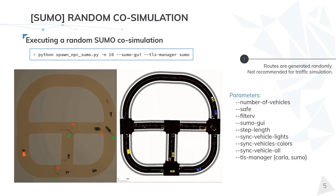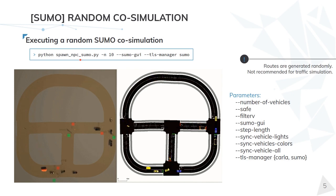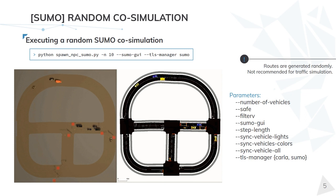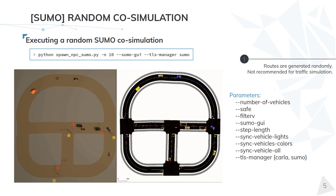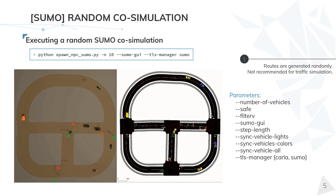The easiest way to run a co-simulation between CARLA and SUMO is by executing the Spawn NPC SUMO script. This script imitates the behaviour of the Spawn NPC script that we are already providing, but the vehicles, instead of being managed by the traffic manager, are managed by SUMO. You just have to execute the script and it automatically detects the CARLA map that is active and generates all the necessary files in order to run a SUMO simulation. Similarly to the Spawn NPC script, you can customise the behaviour through several parameters.